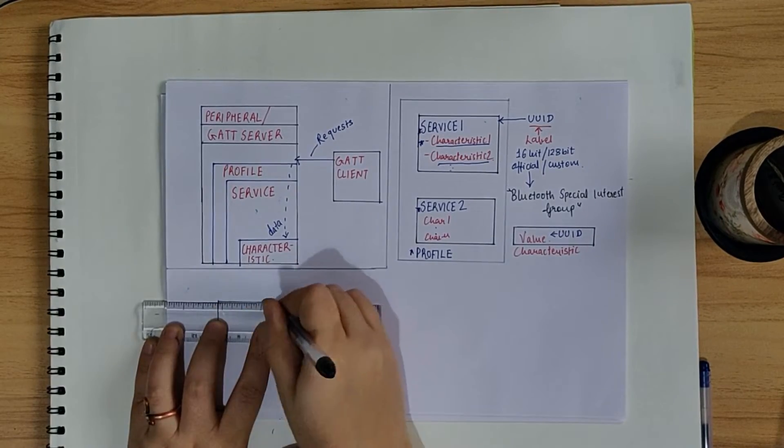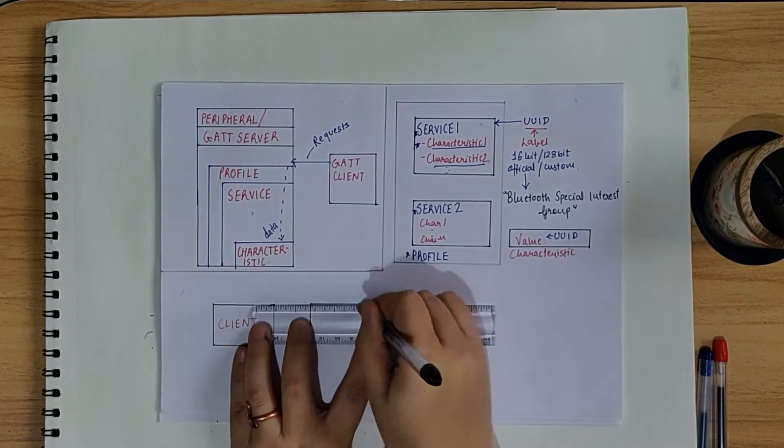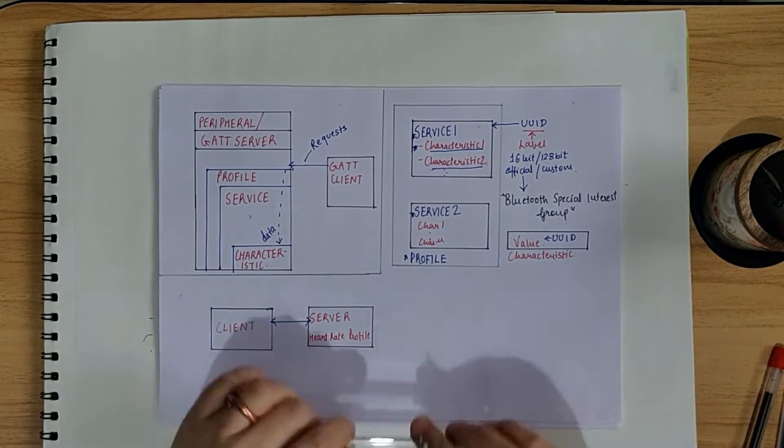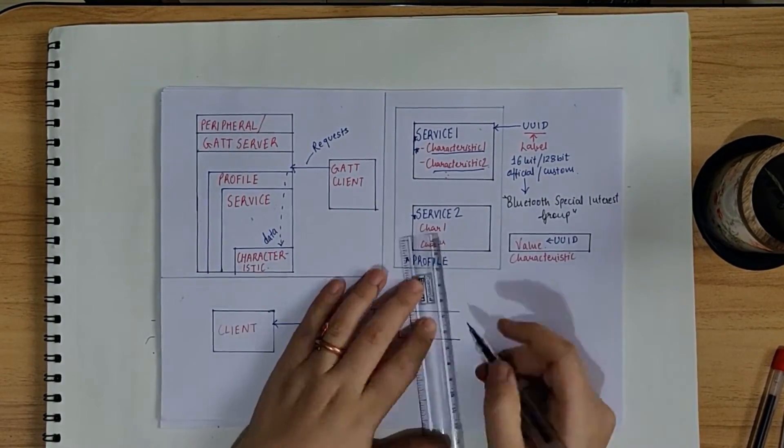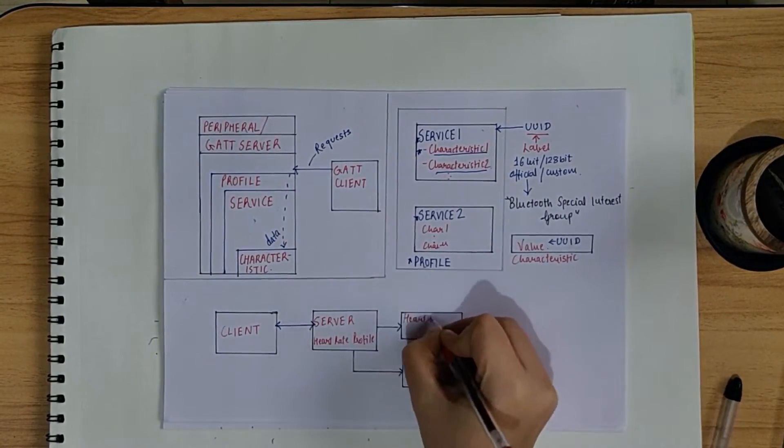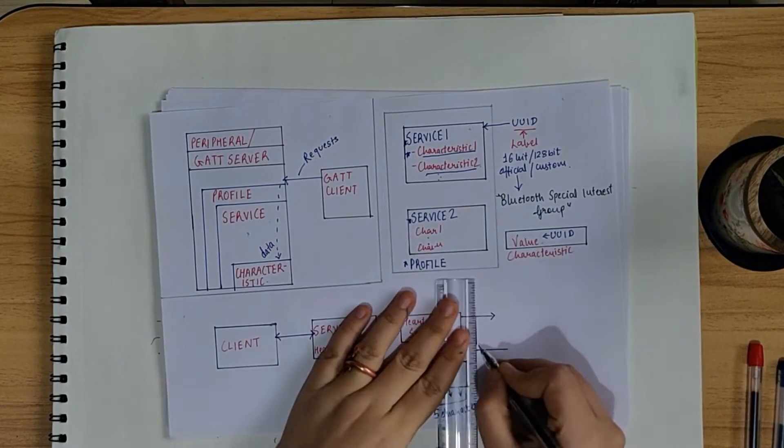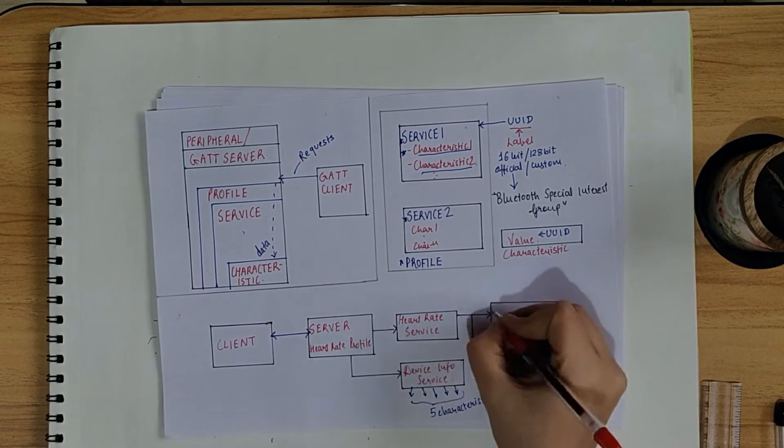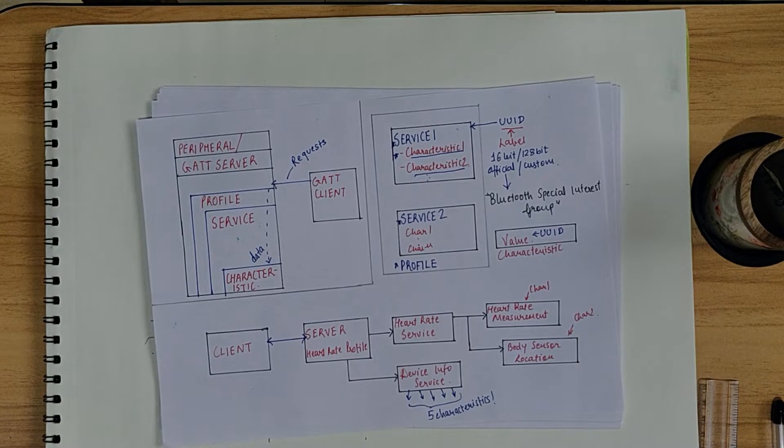Let's take a look at a standard heart rate profile to understand the GATT concepts that we just discussed in a better way. So, there is a GATT client which is accessing the heart rate profile on the GATT server. The profile consists of two services which are heart rate service and device info service respectively. The device info service further contains five characteristics that give information about the device. So, I hope now everything is much more clearer.